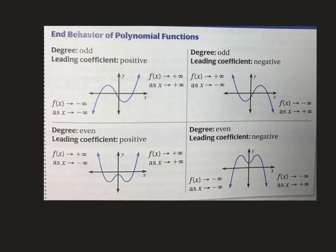End behavior means what happens at the ends of the graph. Anytime the degree is odd, the ends of the graph go opposite directions. If you look at this first graph, the left end is going down and the right end is going up. On this one, the left end is going up and the right end is going down. So anytime the degree is odd, the ends go opposite directions.